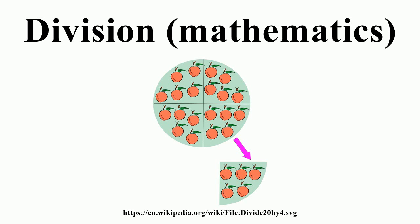Say that 26 cannot be divided by 11. Division becomes a partial function. Give an approximate answer as a decimal fraction or a mixed number. This is the approach usually taken in numerical computation.